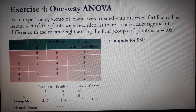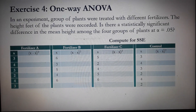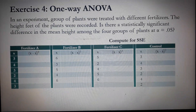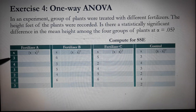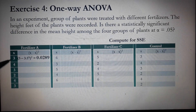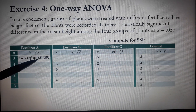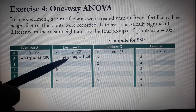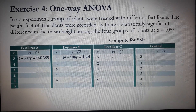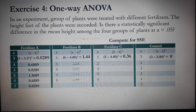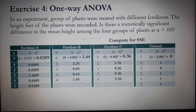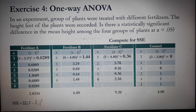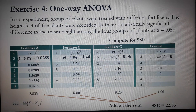Next, we compute the SSE, which requires another table. For each group, we calculate (X minus group mean) squared for every observation. For fertilizer A, the first entry is (3 minus 3.17) squared = 0.0289. For fertilizer B, it's (6 minus 4.80) squared = 1.44. Apply the same procedure for all groups, then sum all values to obtain the SSE.